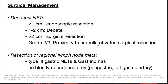For duodenal neuroendocrine tumors: less than 1 cm — endoscopic resection; more than 2 cm — surgical resection. There is debate for tumors between 1 to 2 cm, grade 2 or 3, and those in proximity to the ampulla of Vater — surgical resection is preferred, mostly in the form of Whipple's procedure. For type 3 gastric neuroendocrine tumors and gastrinomas, regional lymph node resection in an en-bloc lymphadenectomy is required.